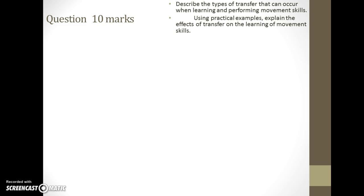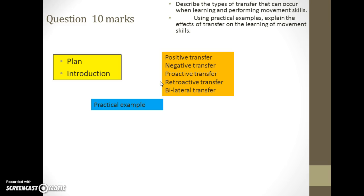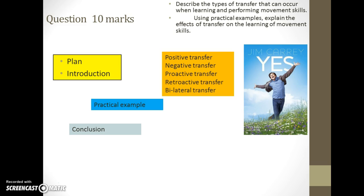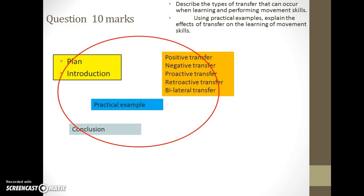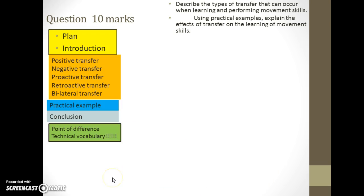For the final 10-mark question — explain the effect of transfer on the learning of movement skills using practical examples — most students will write a plan with an introduction, identify each type, give practical examples, and write a conclusion. But to guarantee access to all 10 marks and reach a higher level, you need to use technical vocabulary. Let's look at the main components needed for the 10-marker.